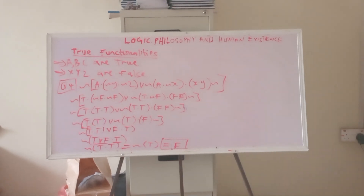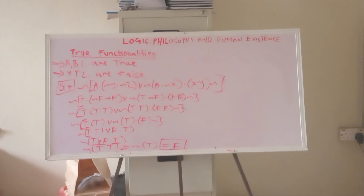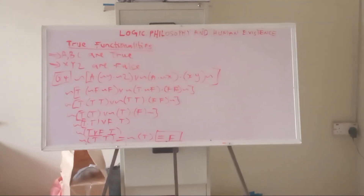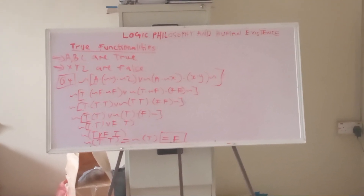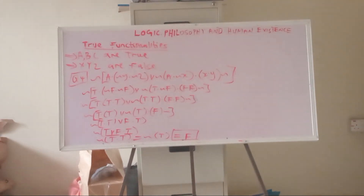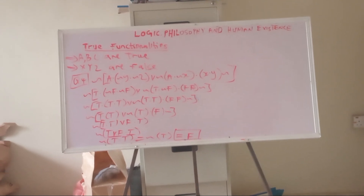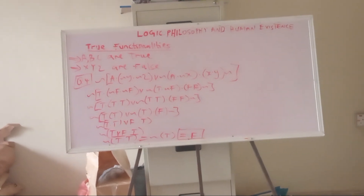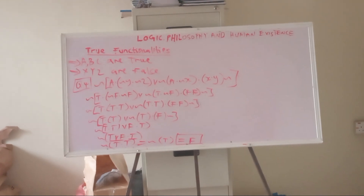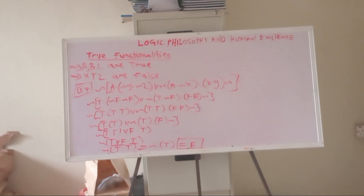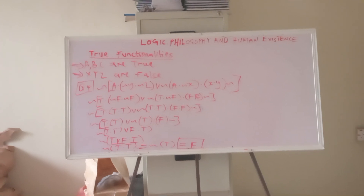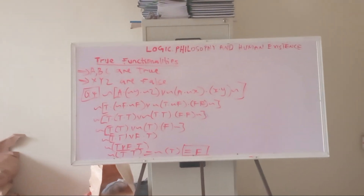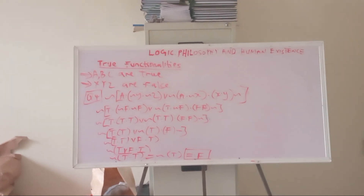Solving step by step: ¬F gives T, so T ∧ (T ∧ T) — the inner bracket gives T ∧ T = true. In the second part, ¬F gives T, so T ∧ T = true. Then ¬T gives false. Also F ∧ F is false. Now inside the big bracket you have T ∨ F which is true; then T ∧ F which is false.